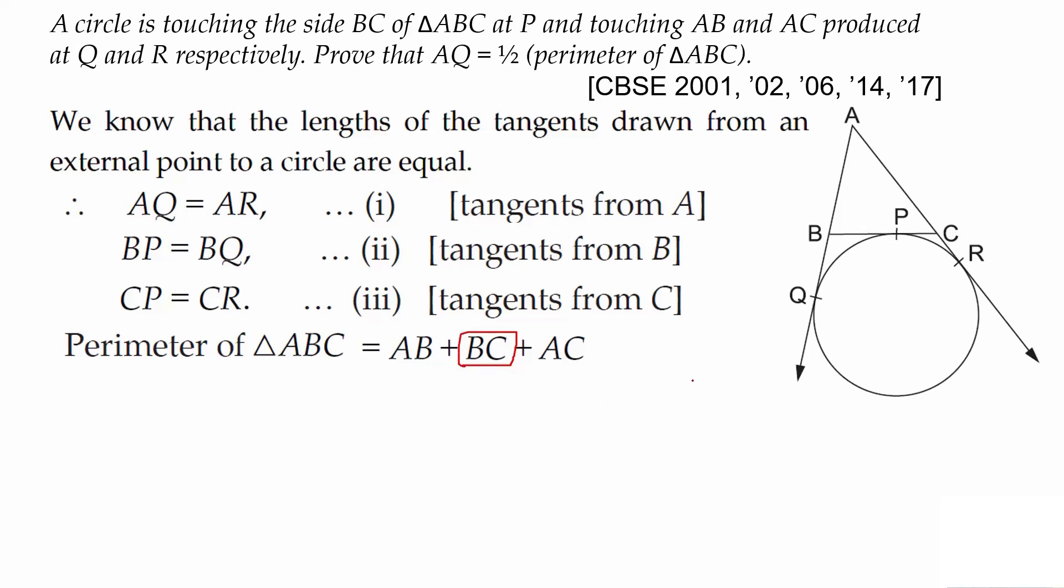BP can be replaced by BQ and CP can be replaced by CR. We will replace using equation number 2 and 3. Now what is AB plus BQ? AQ. And what is CR plus AC? AR.